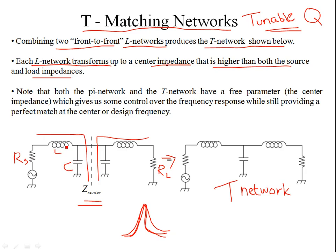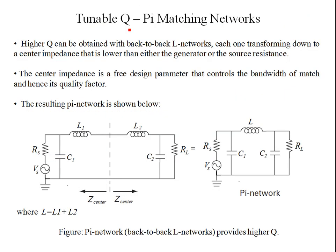A series inductance with a parallel shunt capacitance will produce the center impedance. If you're looking left or right, you see the same center impedance — the reactive elements combined with the load resistance on one side, and with the source resistance on the other. If you tune the center impedance, you tune the quality factor of the match.